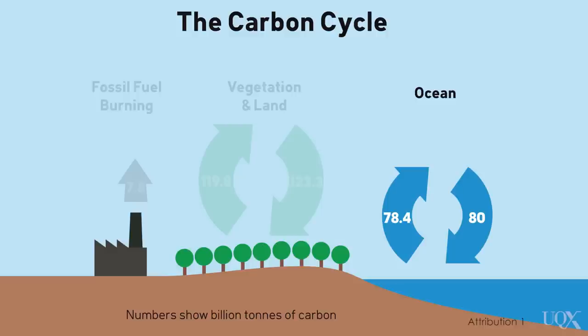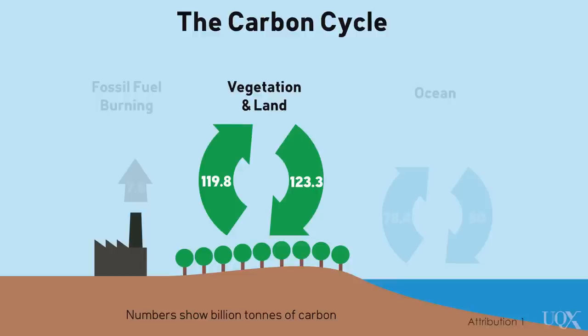Each year the ocean absorbs 80 billion tonnes of carbon from the atmosphere but only releases 78 billion tonnes back into the atmosphere. Likewise, plants extract around 123 billion tonnes of carbon from the atmosphere each year for photosynthesis but release 119 billion tonnes when they die and decay.